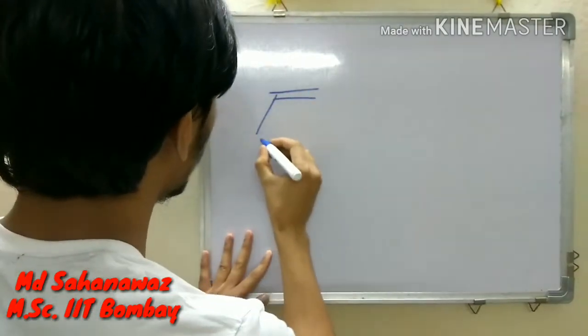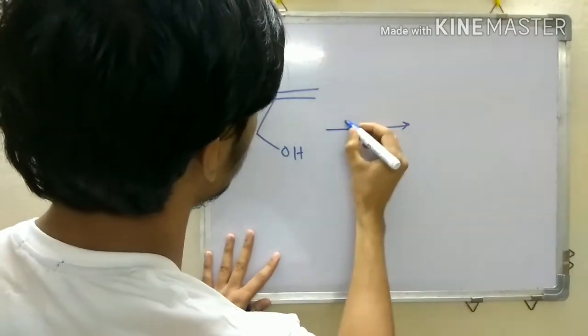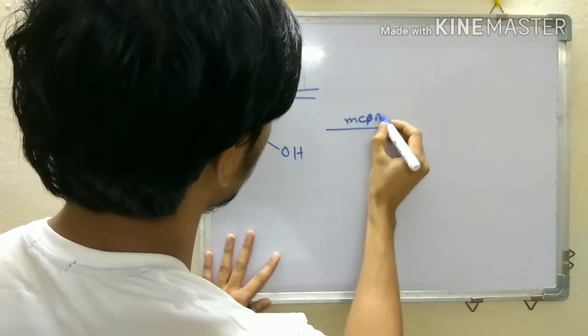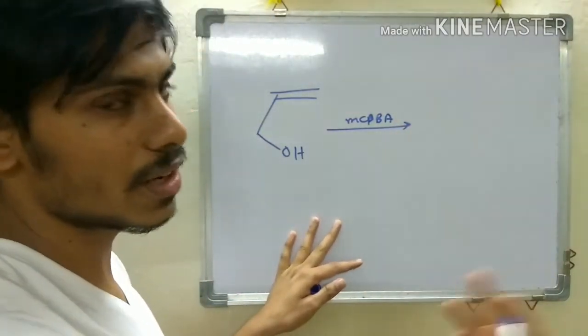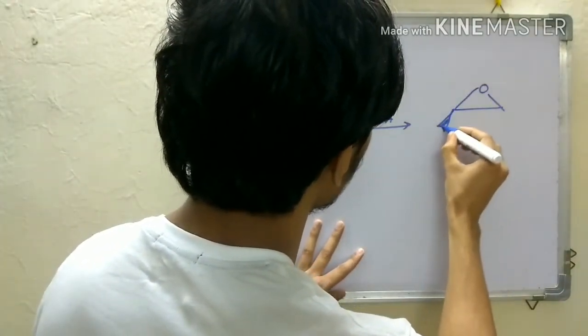You have an allylic alcohol and if you epoxidize it with metachloroparbenzoic acid (MCPBA), which I discussed as the epoxidizing agent in the Prilezhaev reaction, you will be getting both products, both enantiomers.